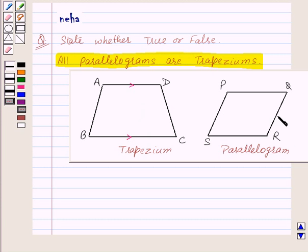Now in a parallelogram we have both the pairs of opposite sides as parallel. That is PQ is parallel to SR and PS is parallel to QR.